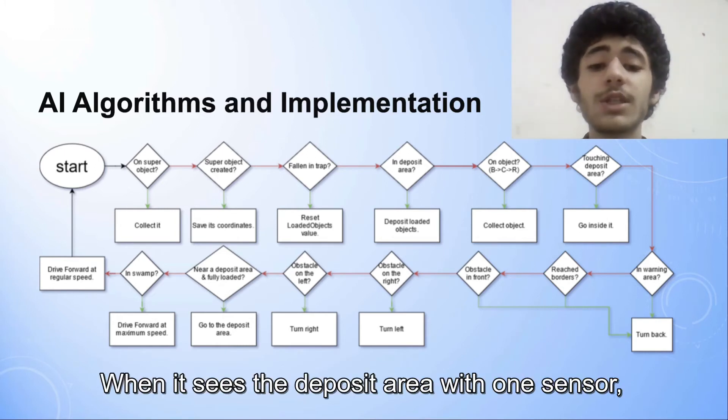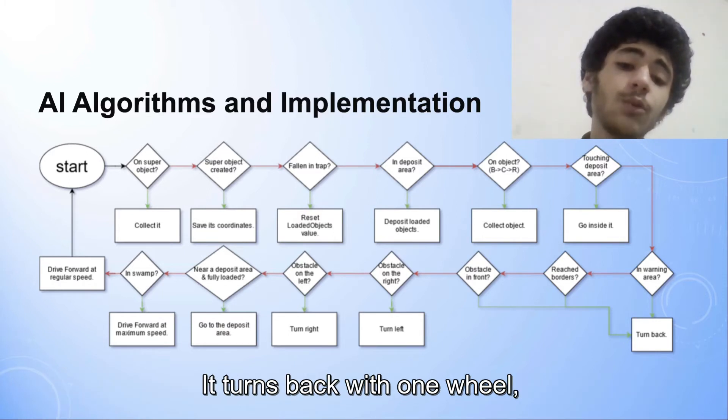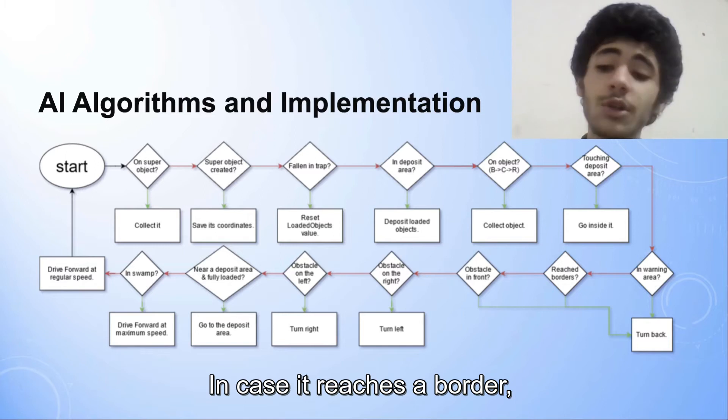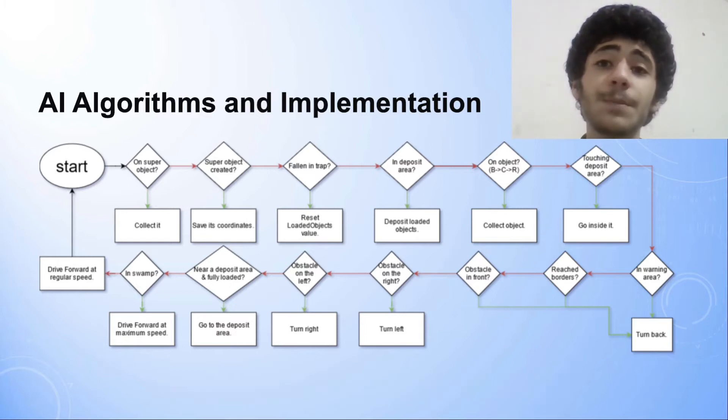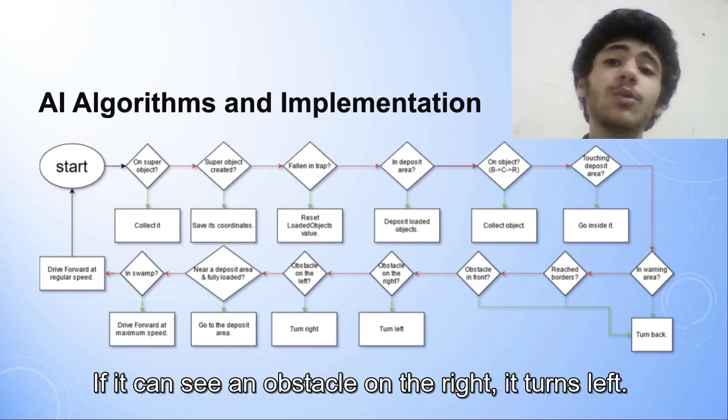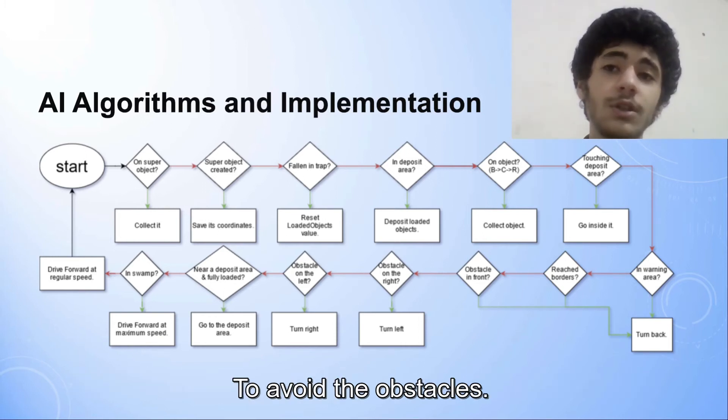When it sees the deposit area with one sensor, it moves inside it so that it can see it with both sensors. It turns back with one wheel in case it reaches a border, it's in the yellow warning area, or it can see an obstacle in front of it. If it can see an obstacle on the right, it turns left, and if it can see an obstacle on the left, it turns right, to avoid the obstacles.